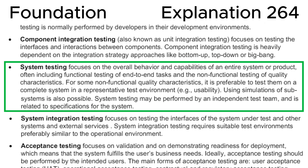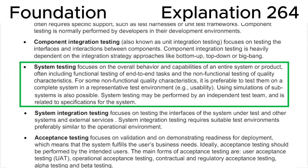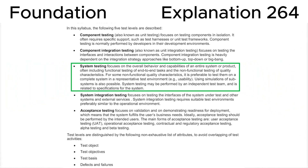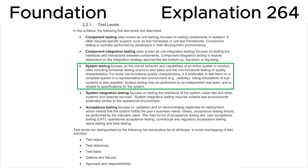For some non-functional quality characteristics it is preferable to test them on a complete system in a representative test environment, e.g. usability. Using simulations of subsystems is also possible. System testing may be performed by an independent test team and is related to specifications for the system — consistent with the correct answer A.